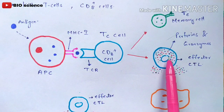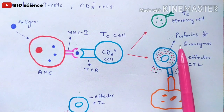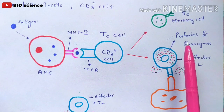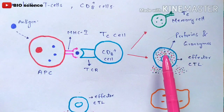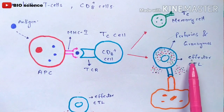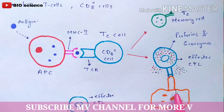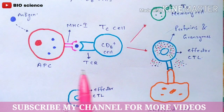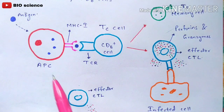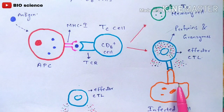Once the antigen is received, the effector cytotoxic T lymphocyte generates perforins and granzymes in its cytoplasm and releases them. Perforins and granzymes are harmful chemicals capable of killing cells. The effector cytotoxic T lymphocyte then binds to the infected cell, also called the target cell or antigen presenting cell.